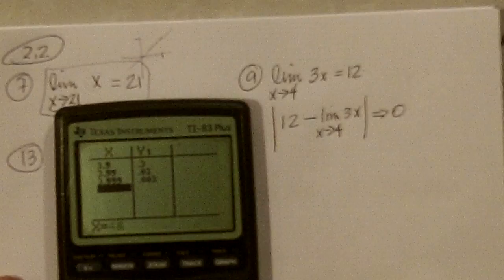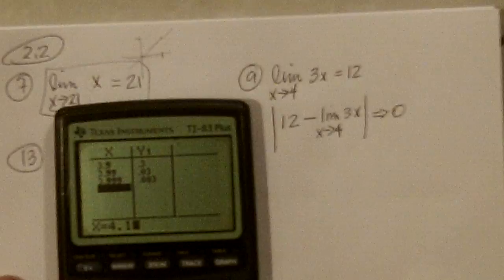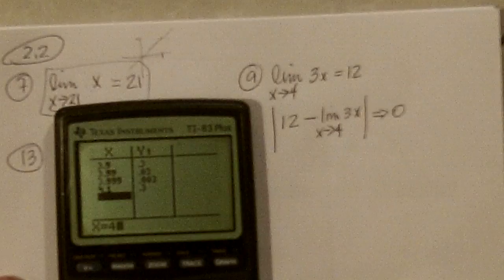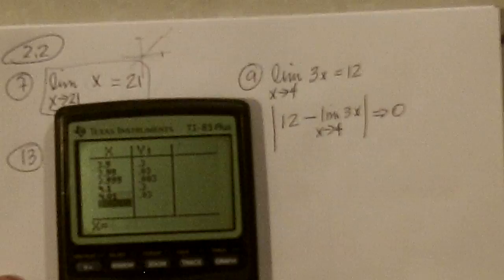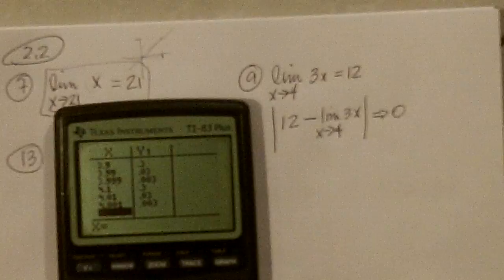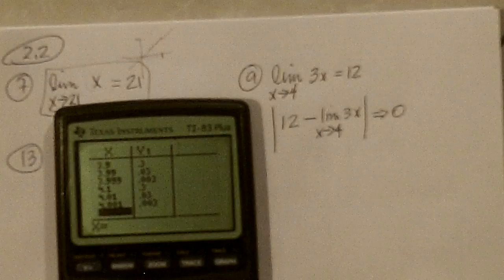Now, I could do from the positive side, 0.4, 0.1, and we get 0.3, 4.01, get closer, 4.001, keep getting closer, and I could keep doing this and keep getting closer and closer,